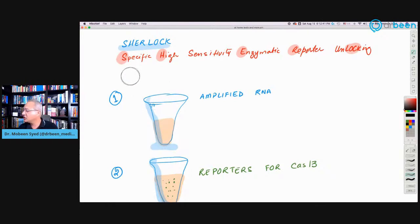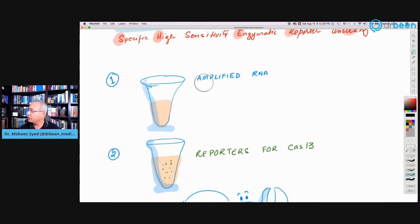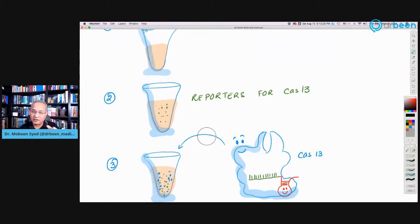Let's look at these technologies. Sherlock stands for Specific High Sensitivity Enzymatic Reporter Unlocking. Here is how it works. First, you take a person's saliva and amplify the RNA in it. We have discussed in the past how amplification of RNA can be done - you take a piece of RNA and keep making copies. The first step is amplified RNA. This is done within 40 to 60 minutes, so it's a fast test.